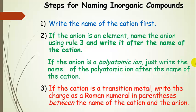Now if the anion is an element, we're going to name the anion using Rule 3 — those are the ones that have the IDE ending — and write it after the name of the cation. If the anion is a polyatomic ion, we just write the name of the polyatomic ion after the cation. Finally, if the cation is a transition metal, we write the charge in parentheses between the cation name and the anion name in the full name of the compound.